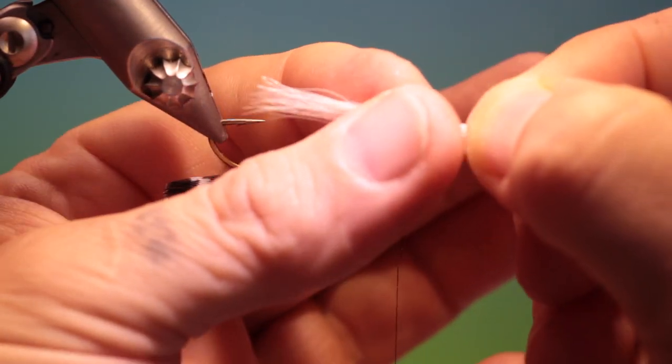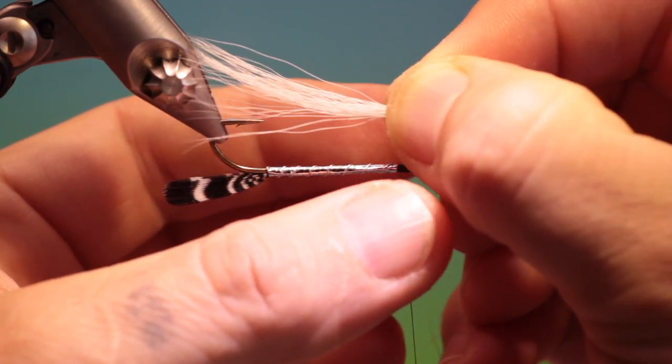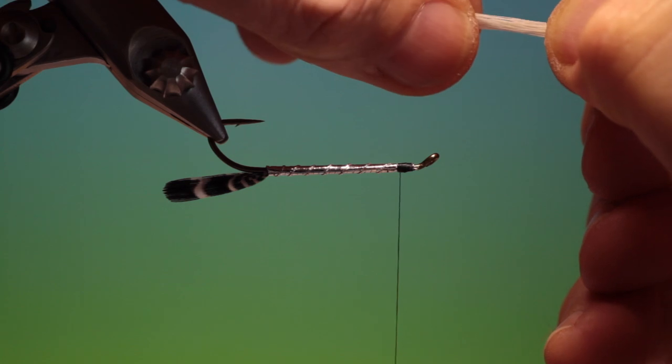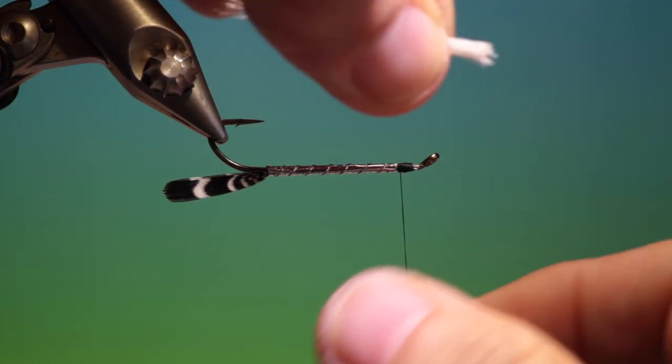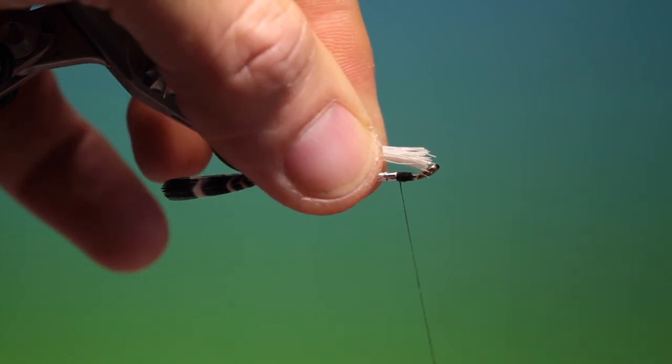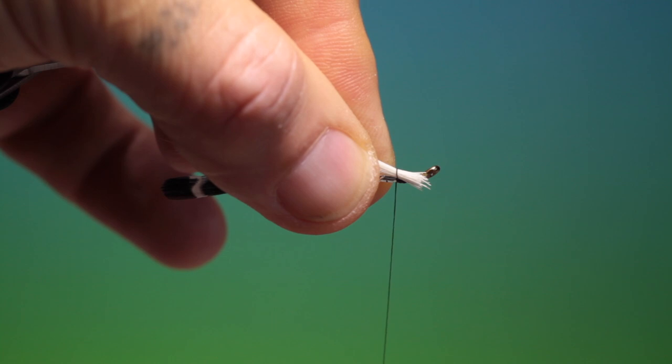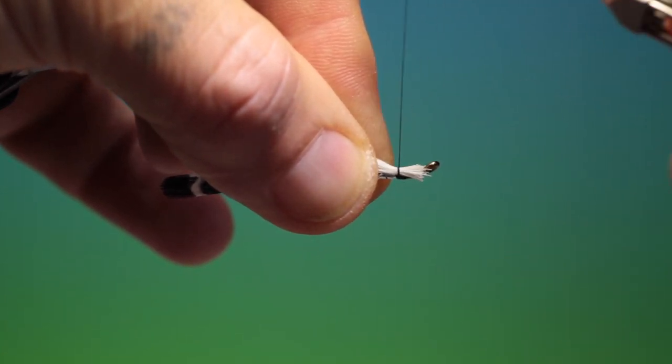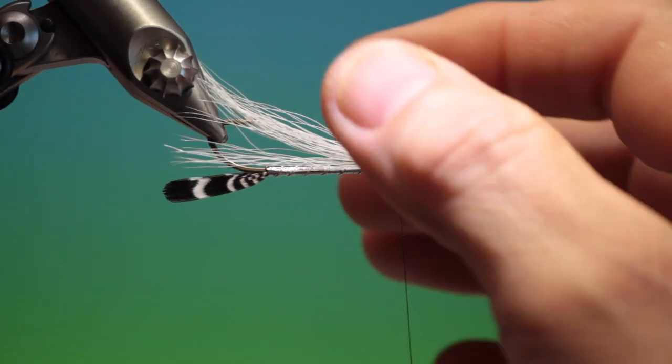So I've cleaned and stacked a little bunch of bucktail. So I'll just measure it. It doesn't want to be as long as the tail. I'll just position that with a couple of turns. Just make sure that's looking good.